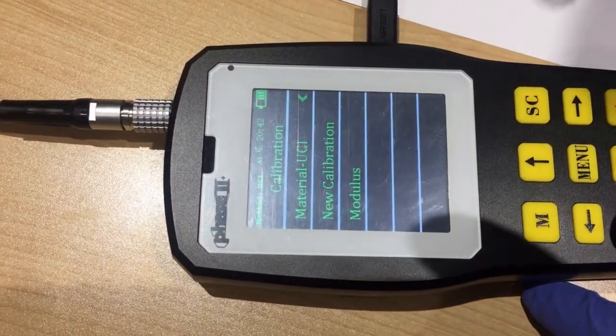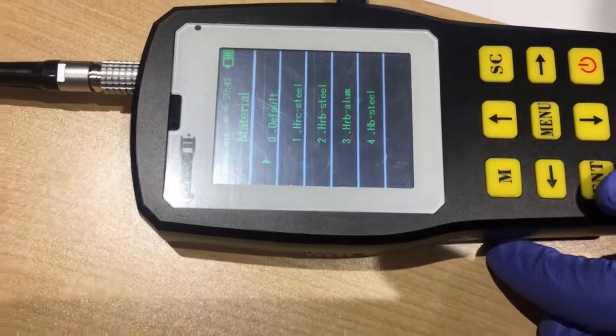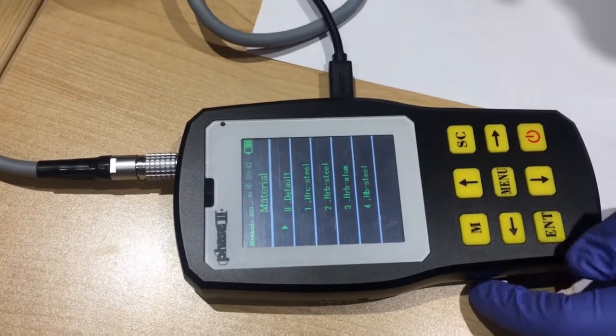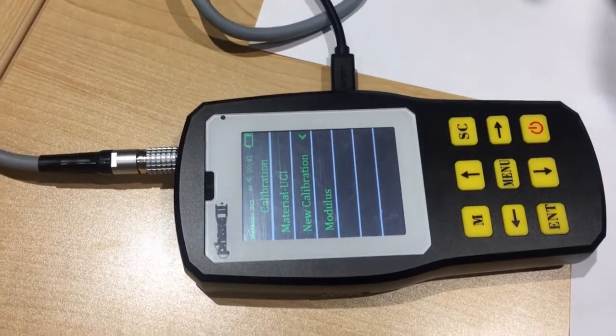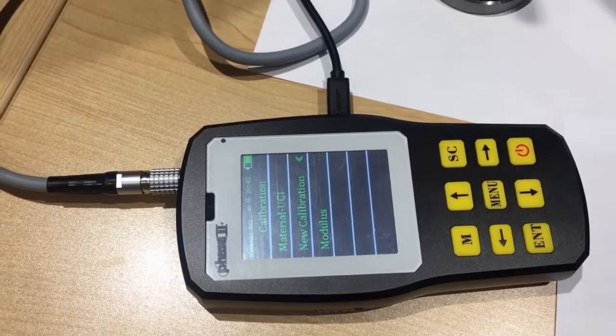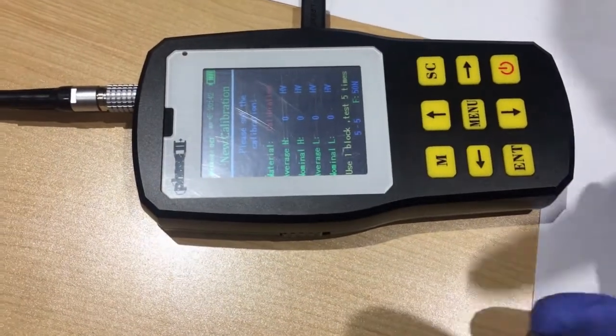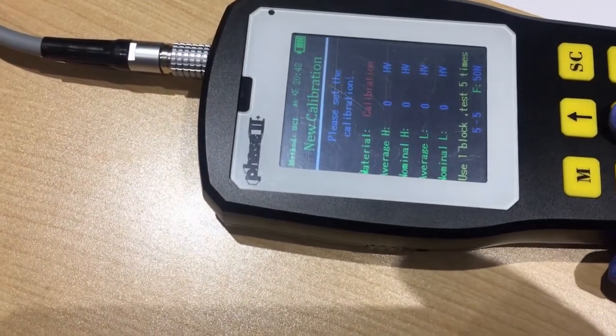Firstly, you need to choose your material, UCI, which depends on the test block you want to use. And also, you can set a new calibration. You can name it yourself as you want. That's an easy way for you to personalize your machine.